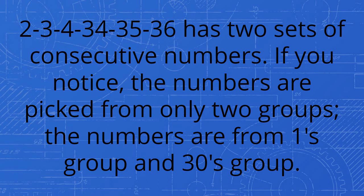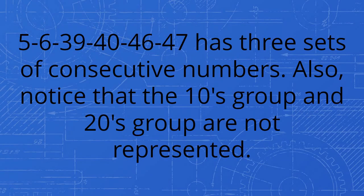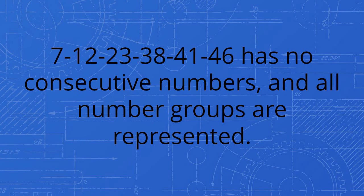The following lotto lines show examples of how combinations may differ in characteristics. 2-3-4-34-35-36 has two sets of consecutive numbers. If you notice, the numbers are picked from only two groups. The numbers are from 1's group and 30's group. 5-6-39-40-46-47 has three sets of consecutive numbers. Also, notice that the 10's group and 20's group are not represented. 7-12-23-38-41-46 has no consecutive numbers, and all number groups are represented.